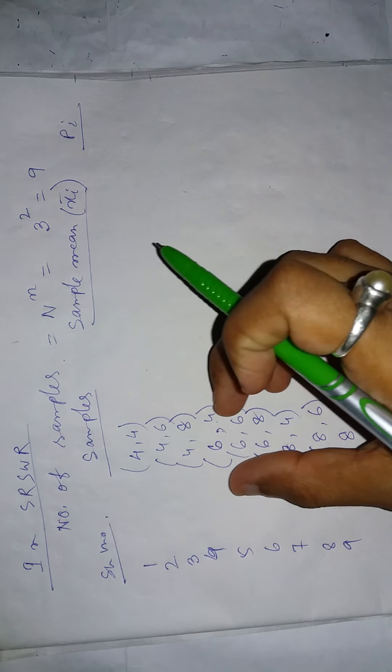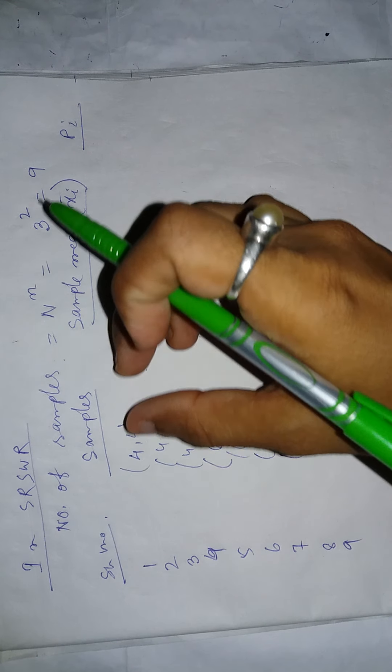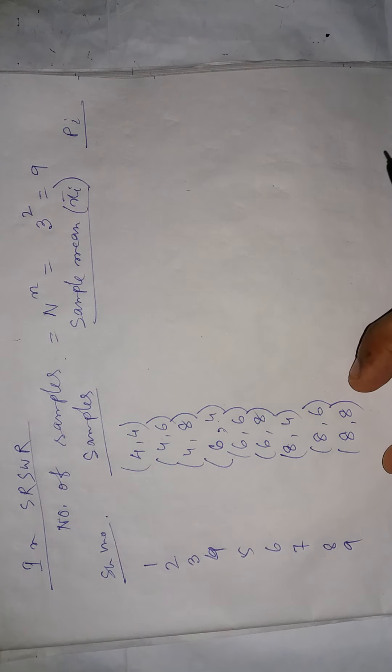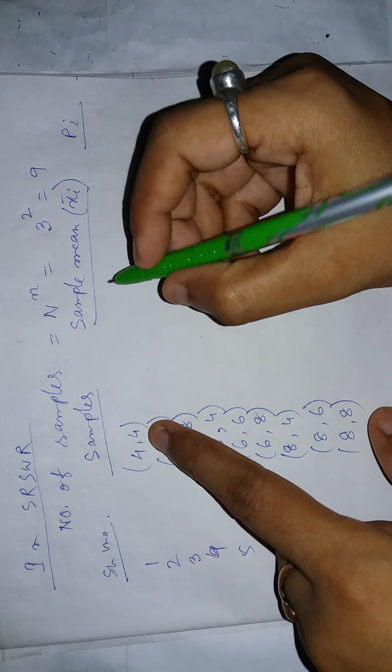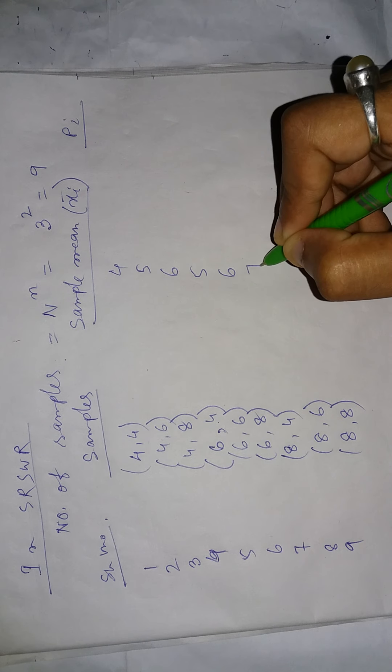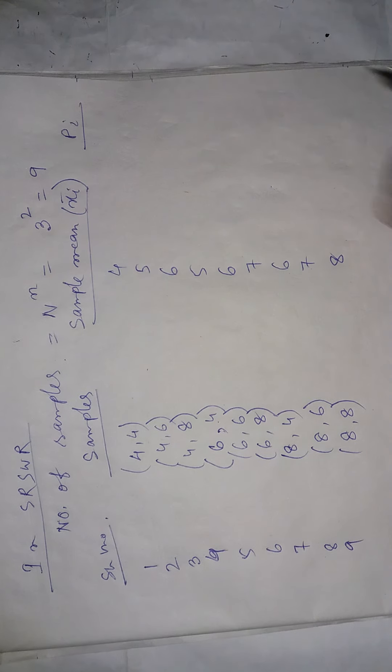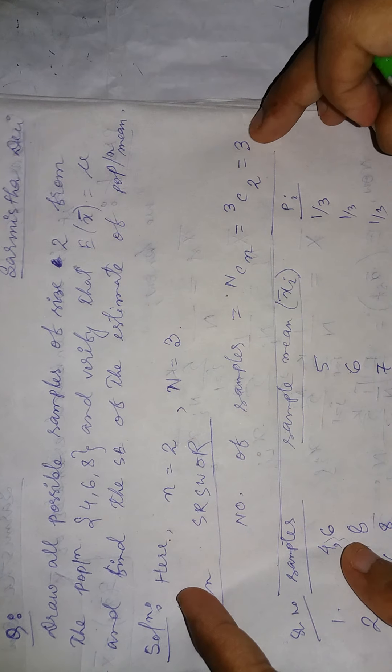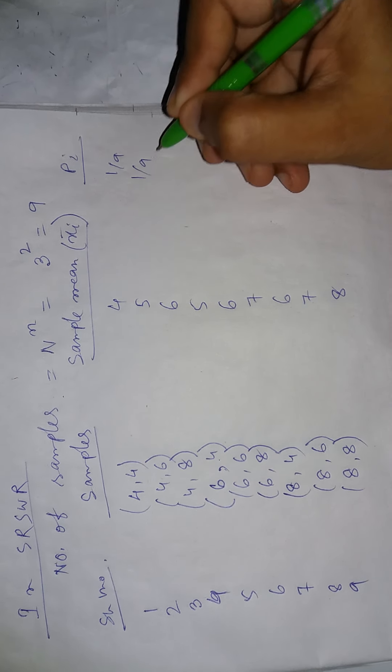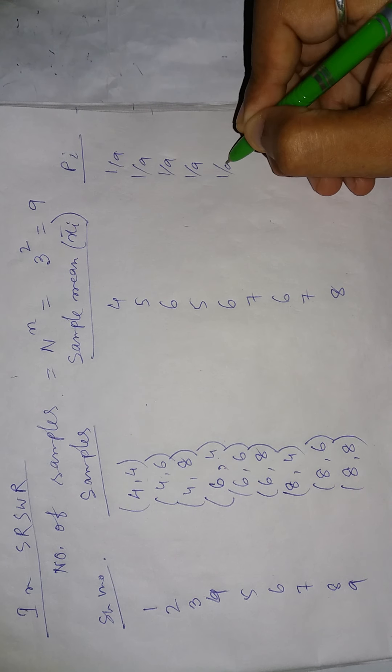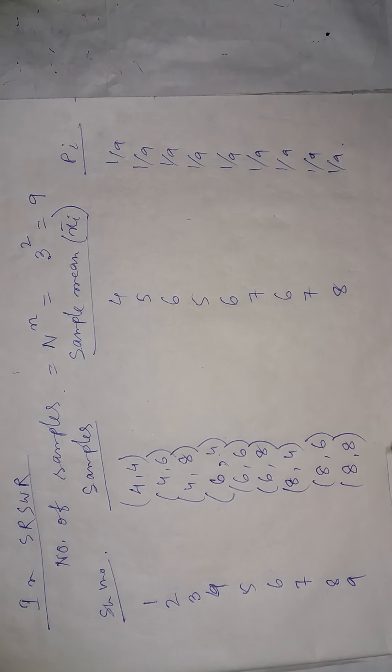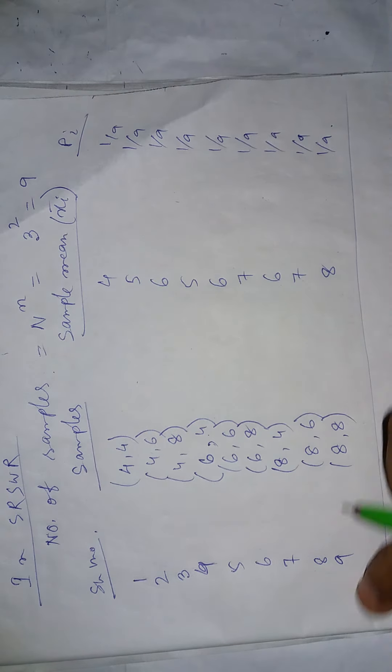Now we calculate the sample means. For sample 4, 4 the mean equals 4. For 4, 6 it equals 5. For 4, 8 equals 6. For 6, 4 equals 5. For 6, 6 equals 6. For 6, 8 equals 7. For 8, 4 equals 6. For 8, 6 equals 7. For 8, 8 equals 8. Since the number of samples is 9, the probability for each sample is 1 by 9.